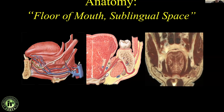The sublingual space is formed laterally by the mandible. This little ridge is called the mylohyoid line. The muscle that goes from the mylohyoid line to the hyoid bone is called the mylohyoid muscle. The muscle running from the hyoid bone up to the tongue is the hyoglossus muscle. Then there are muscles running anterior to posterior in a fan-shaped structure — this is the genioglossus muscle.